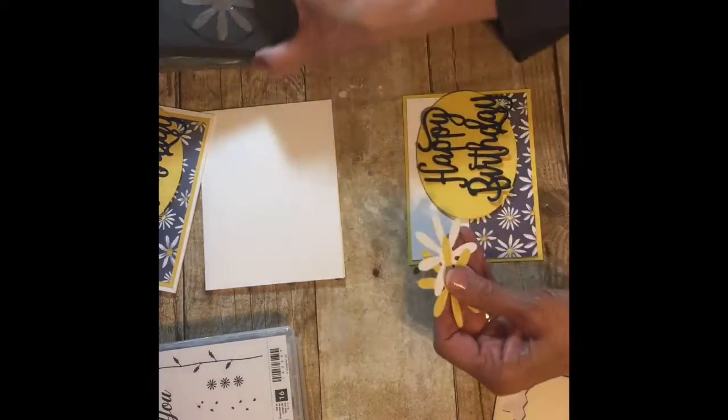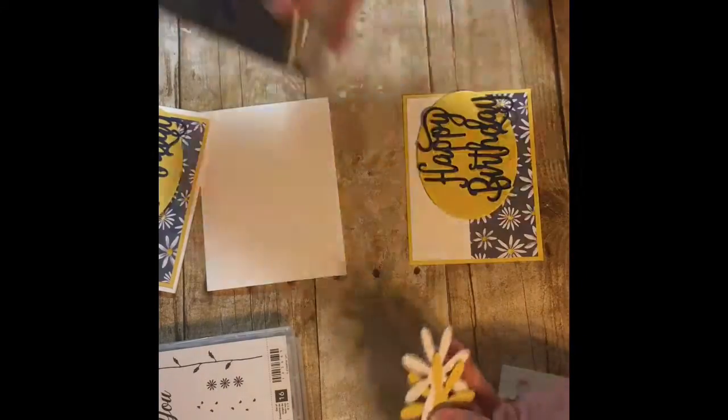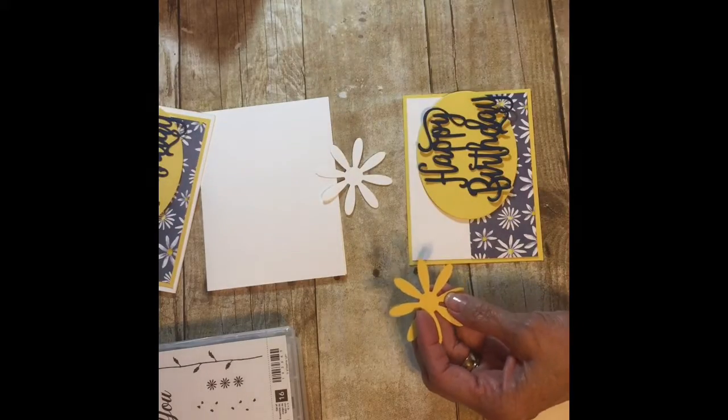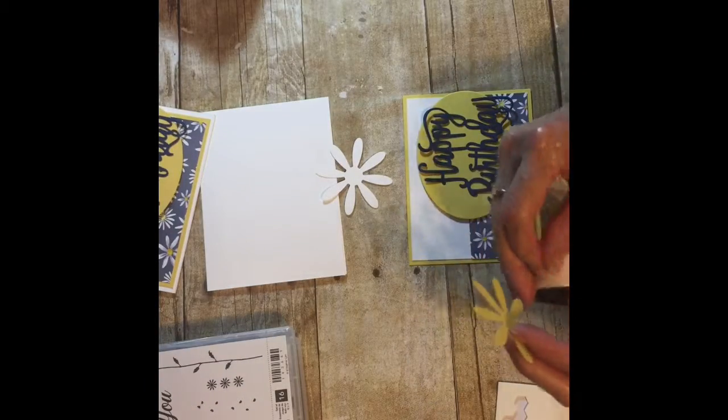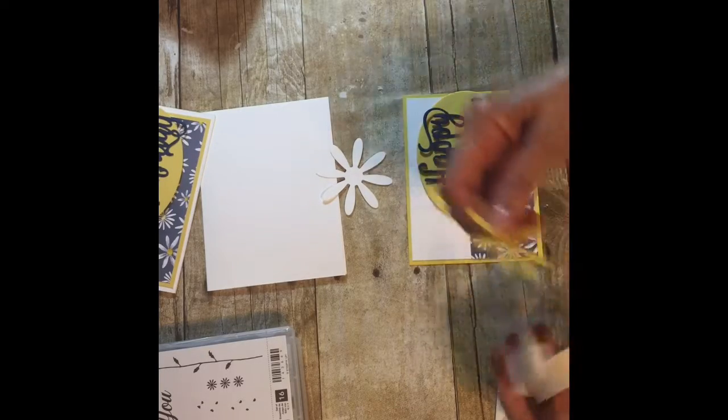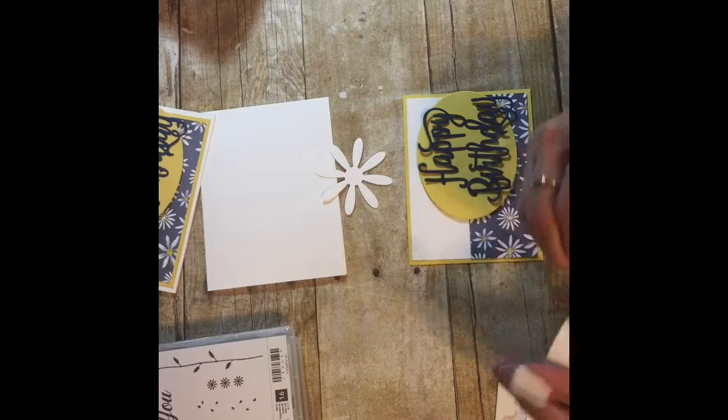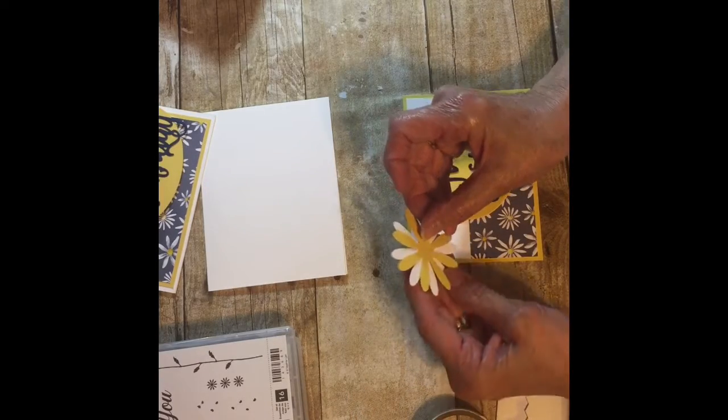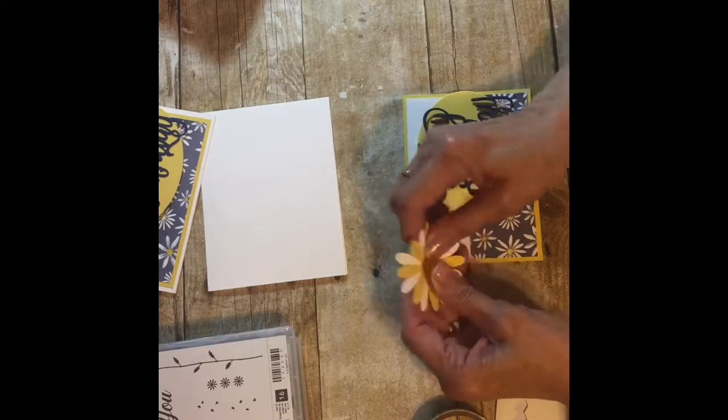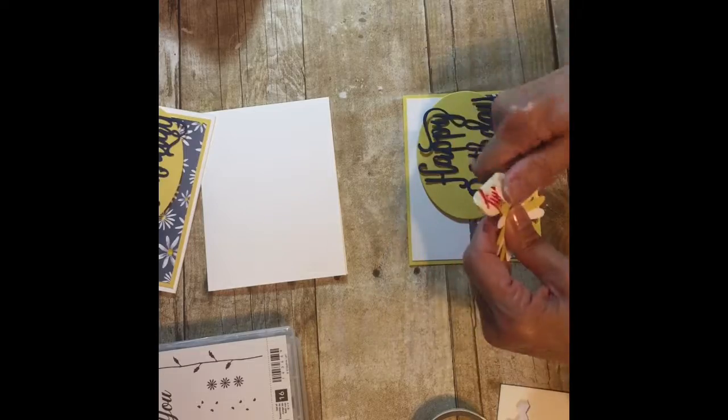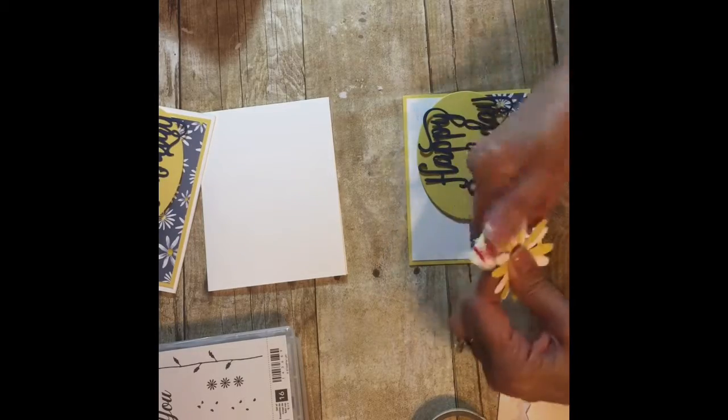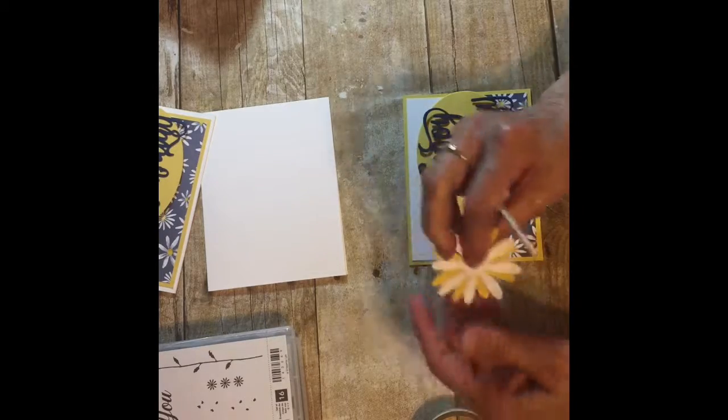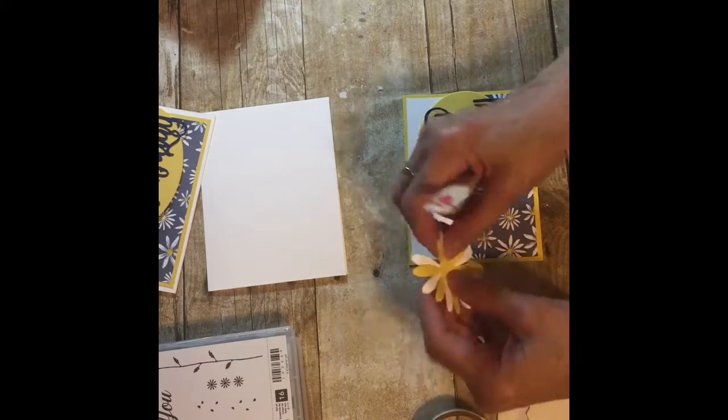I've already punched out with the daisy punch one daisy in white and one daisy in Daffodil Delight. I just like to take my glue dots and put one on the back like this and put it together because I think it looks kind of cute doubled like that. Then if you like you can always fold it with your bone folder, just kind of bend it a little bit if you want it that way. I kind of like this way today.